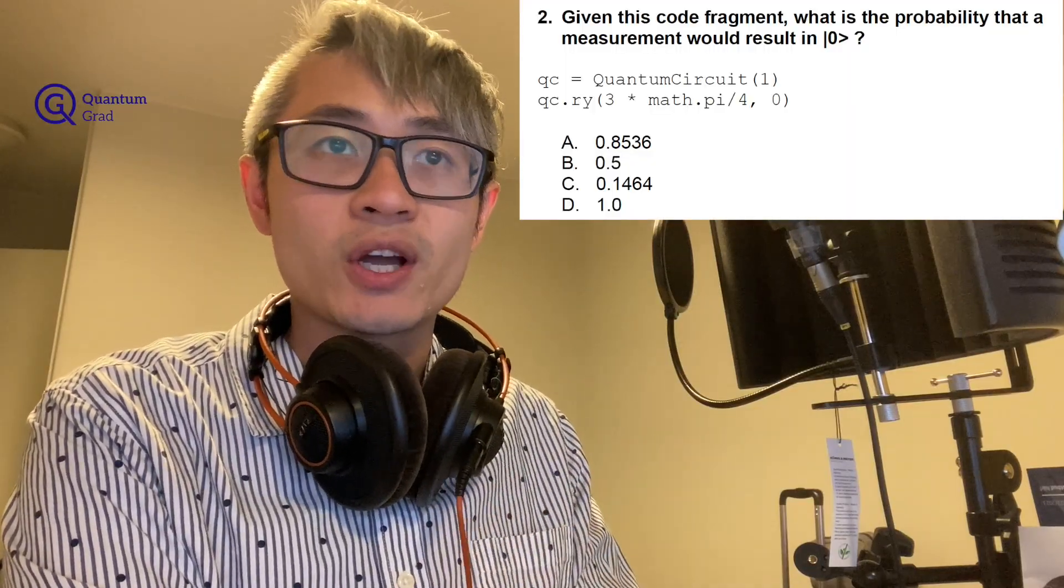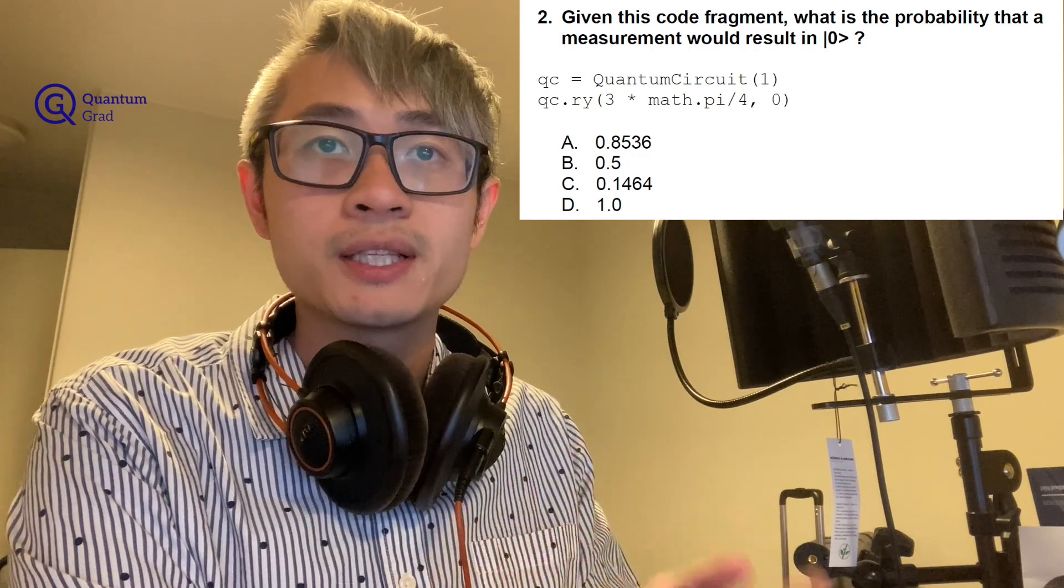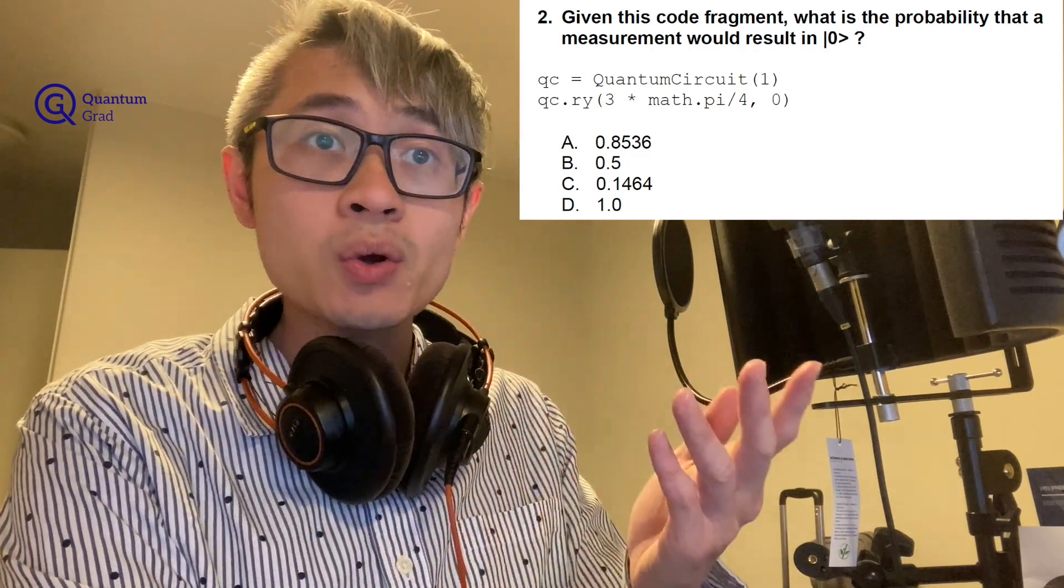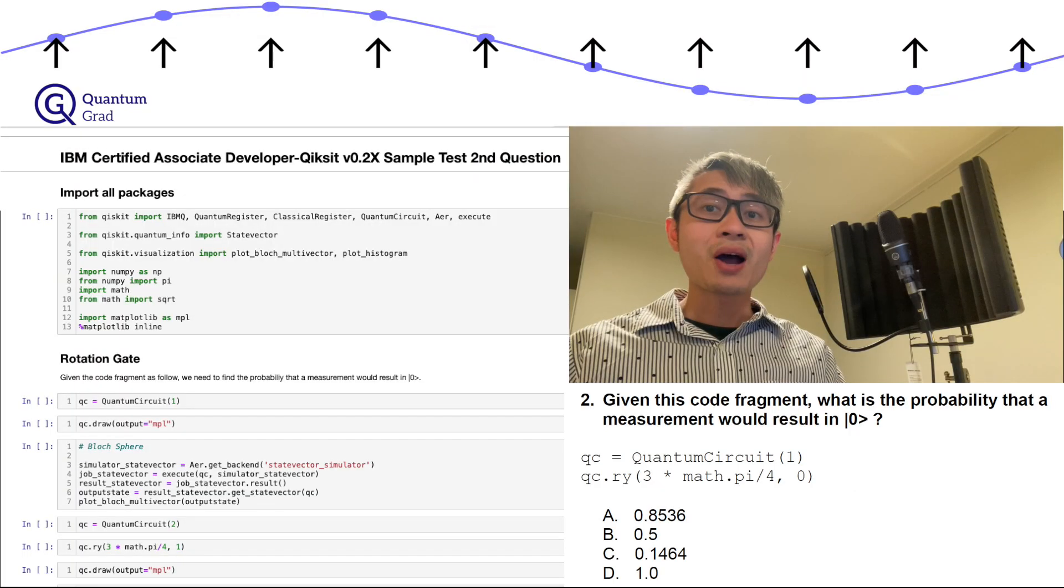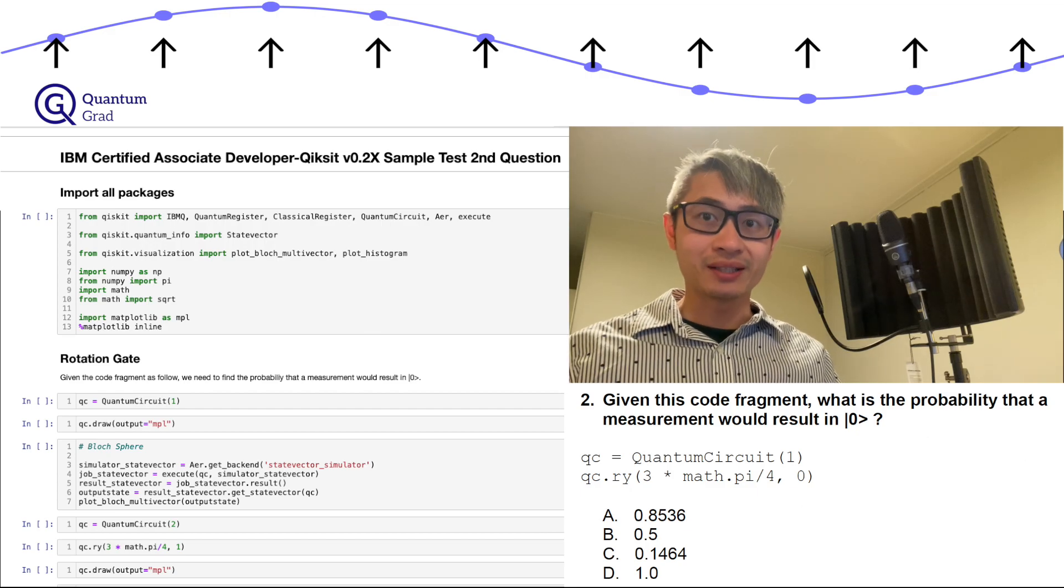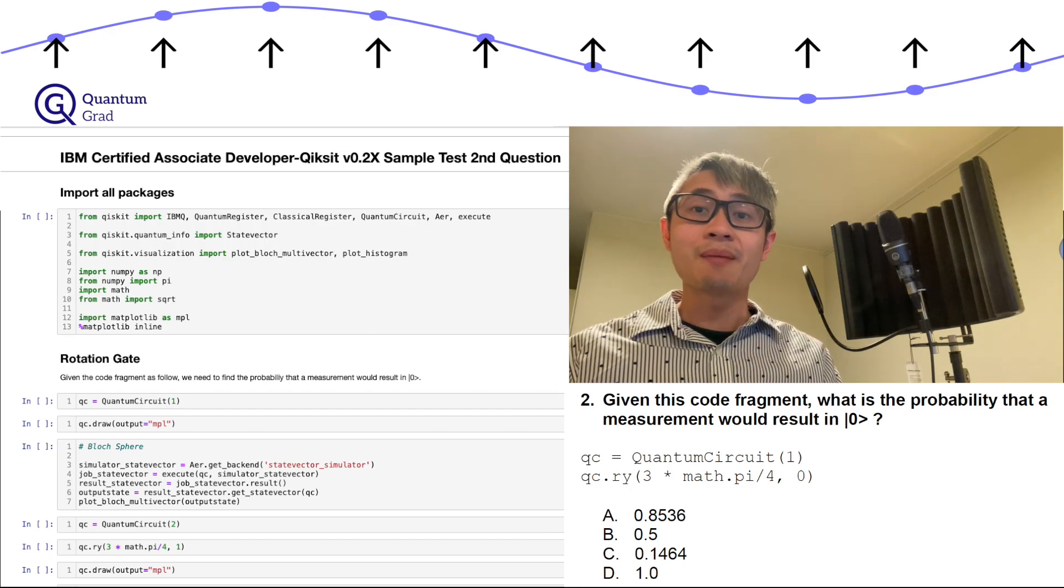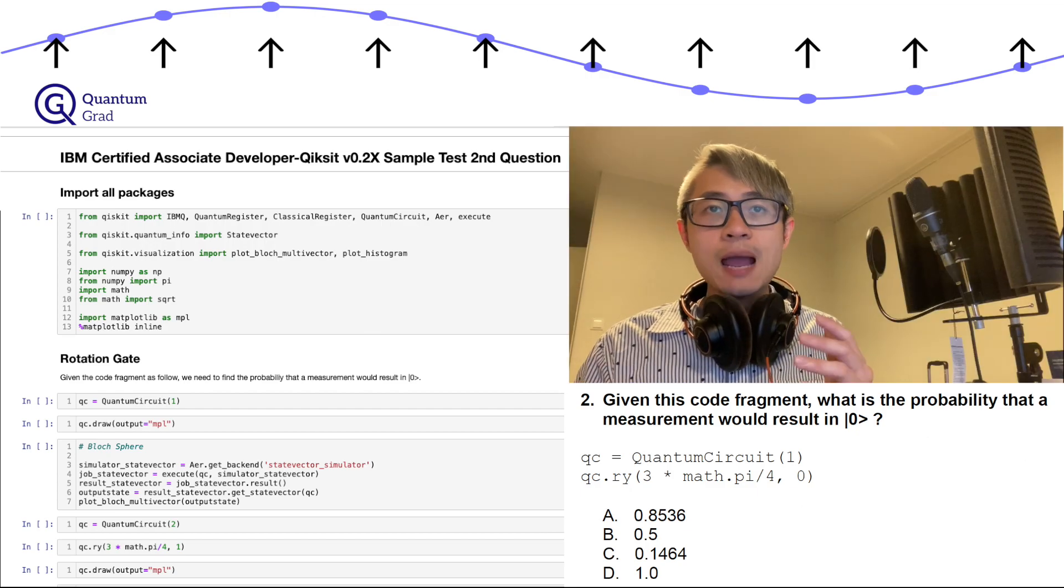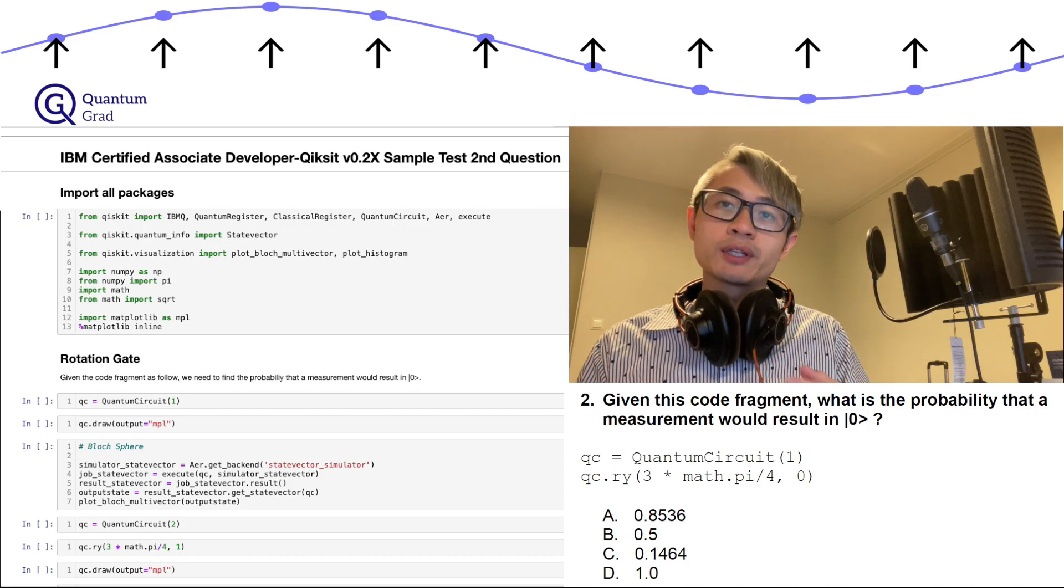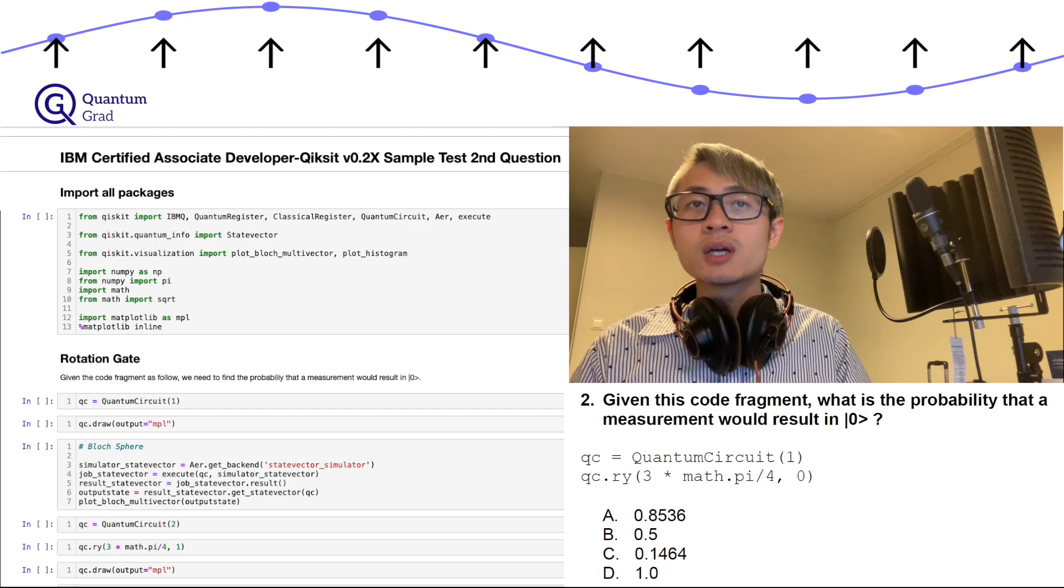Here's the second question: given this code fragment, what is the probability that a measurement will result in ket zero? Here's the code and we have four options. Now we open a Jupyter notebook and code Qiskit to get our hands dirty. First of all, we need to import our packages for coding. In the first episode, we learned how to call the command quantum circuit to create a new circuit. For more details, you can check the card for revision.